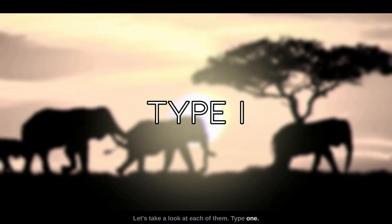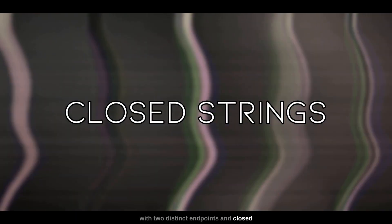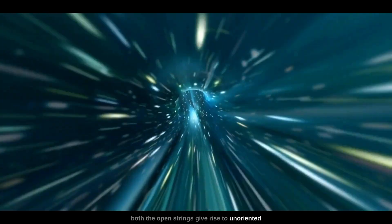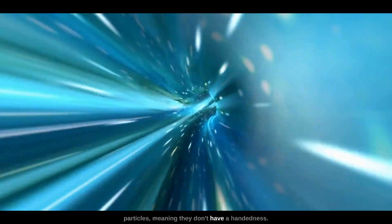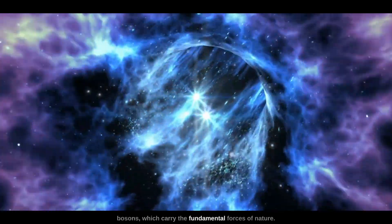Type I: This theory involves open strings - strings with two distinct endpoints - and closed strings forming a loop, and it is the only theory that includes both. The open strings give rise to unoriented particles, meaning they don't have a handedness. They include the group of particles called gauge bosons, which carry the fundamental forces of nature.